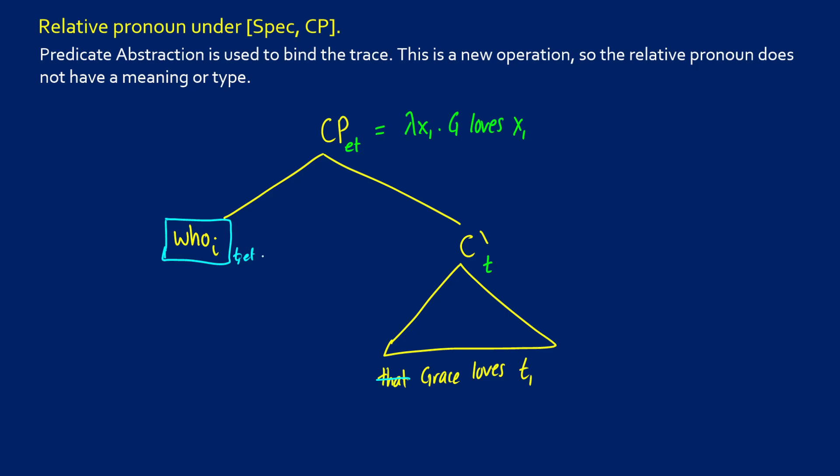So what we're going to do is we're going to introduce this new thing called predicate abstraction. So basically, what's going to happen is if you have some sort of function, like G of X1 and X1 is inside and it's free, what we can do with the next step is we can bind it. So if it's free, what we can do is we can introduce a lambda X1 and that will do the binding.